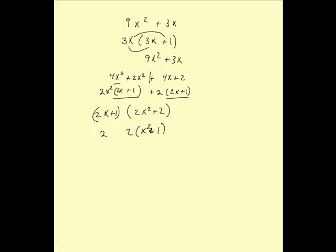Now, I can further factor that into 2 times x squared plus 1. So the complete factorization would be as follows. For 4x cubed plus 2x squared plus 4x plus 2, I can factor that into 2 times 2x plus 1 times x squared plus 1. And that would be completely factored.